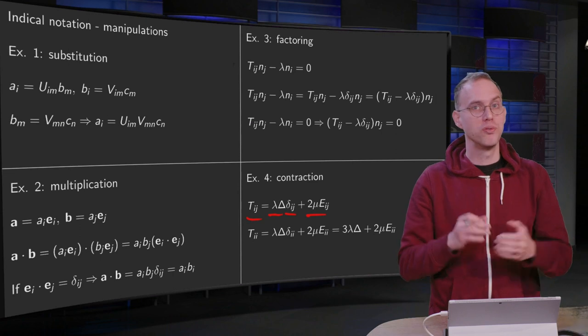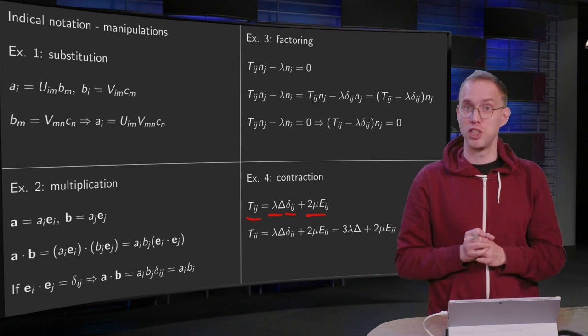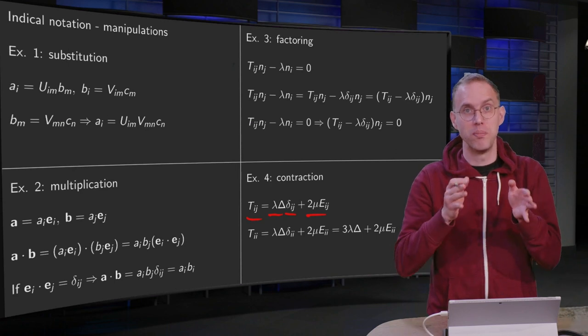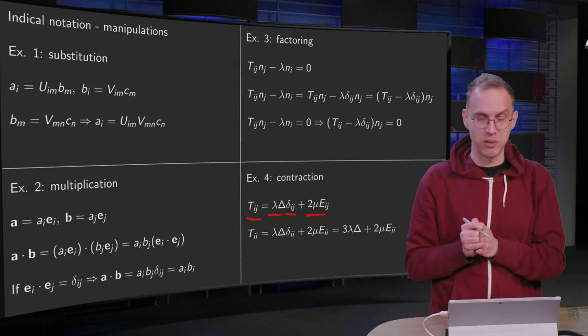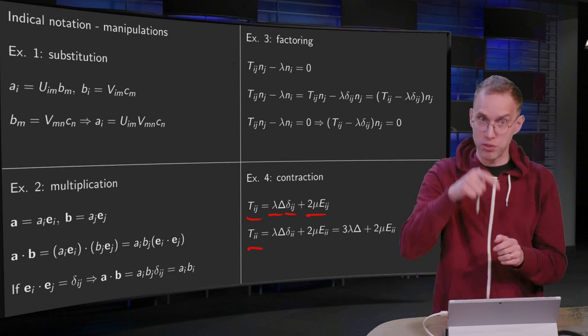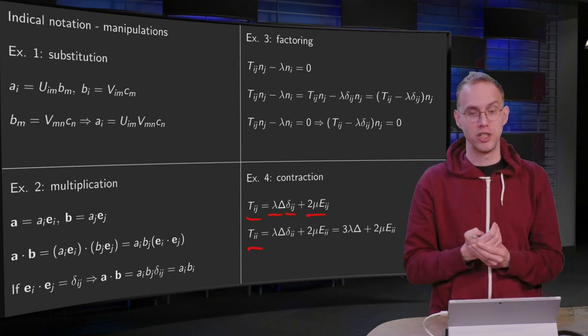Contraction means that you will take both indices the same. So you compute the T_ij, you take the j equal to the i. The operation is called contraction. So if you do it on the left, you have to do it on the right.